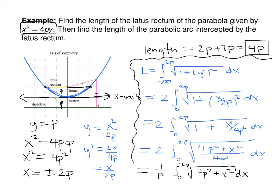The arc length is approximately equal to 4.59p, which makes sense as it is greater than the latus rectum length of 4p.